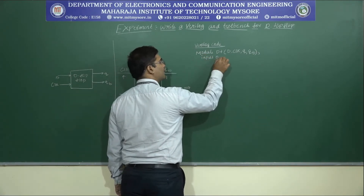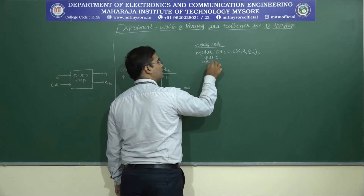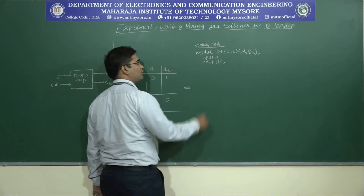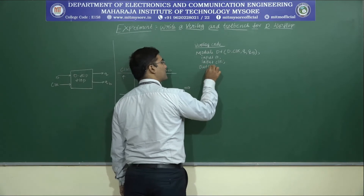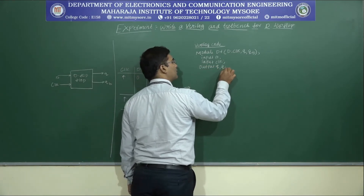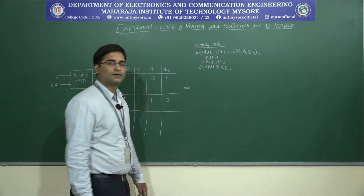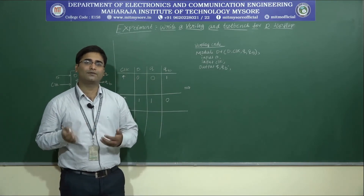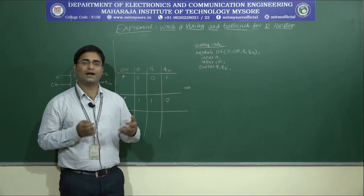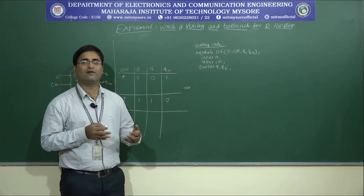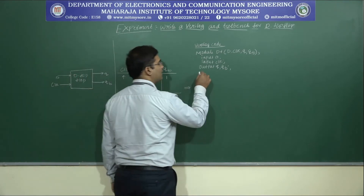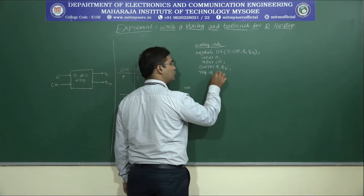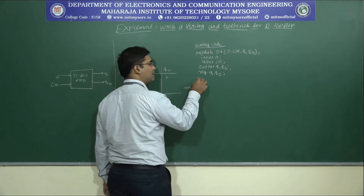We declare input D, input clock, followed by output Q and Q-bar. In Verilog we have different description styles and we are using the behavioral description style. We declare register reg for the outputs Q and Q-bar, followed by the sensitivity list which is always at.